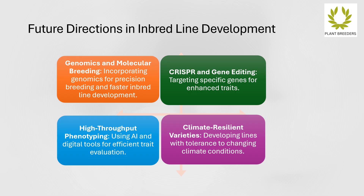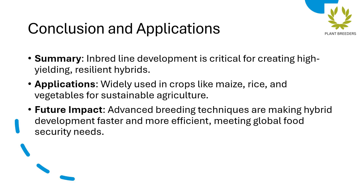Future directions in inbred line development include: genomics and molecular breeding, incorporating genomics for precision breeding and faster inbred line development; CRISPR and gene editing, targeting specific genes for enhanced traits; high-throughput phenotyping, using AI and digital tools for efficient trait evaluation; and climate-resilient varieties, developing lines with tolerance to changing climate conditions.